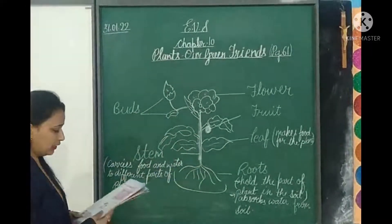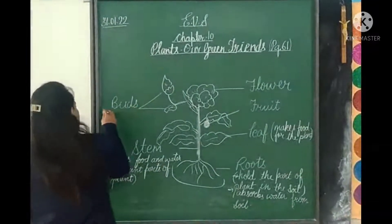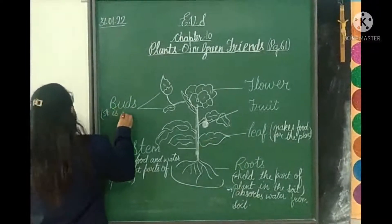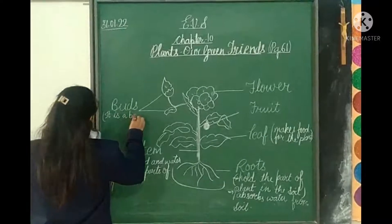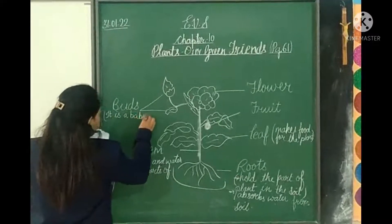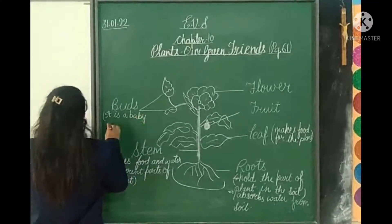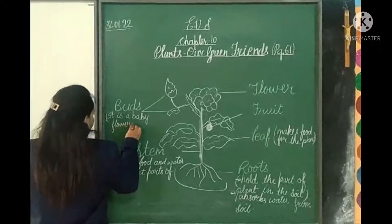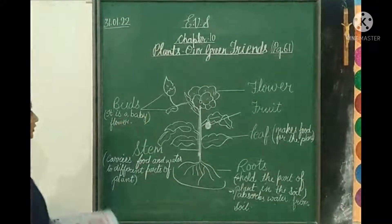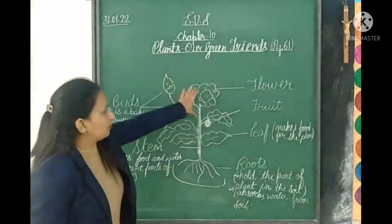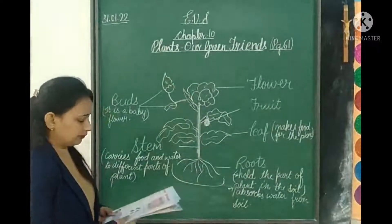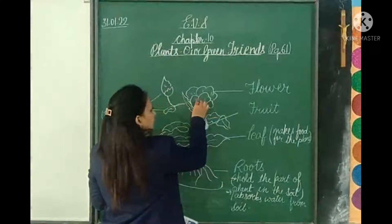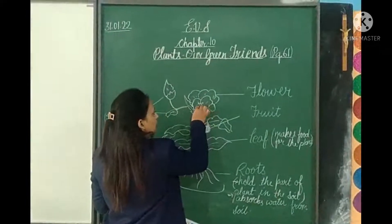Now see what is the function of the bud as a part of the plant. The bud is the baby of the plant — you can say it is called the baby. A flower grows after the bud stage.